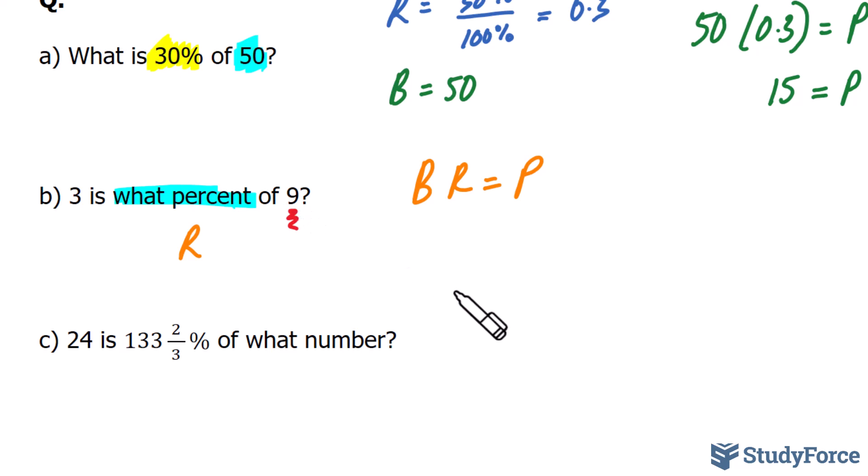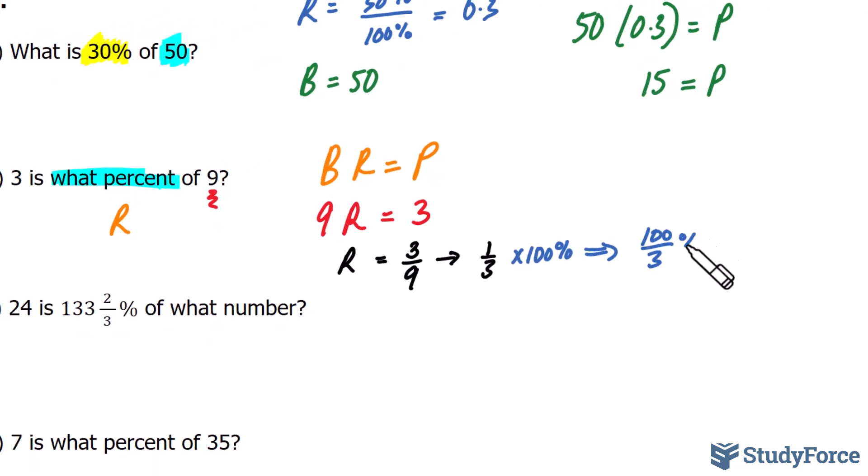So from that, we can say that B equals 9, R is unknown, and our P value must be 3. So if we can find a percentage of 9, then we'll get the portion which is 3. Let's go ahead and solve for R. If we divide both sides by 9, we end up with 3 over 9, and that reduces down to 1 third. And don't forget that your rate should be represented as a percentage. So whatever you find, multiply it by 100%, and it should result in either 100 over 3% or 33 and a third percent.